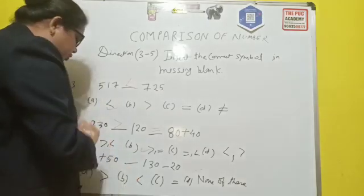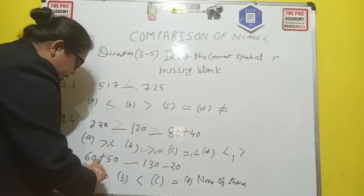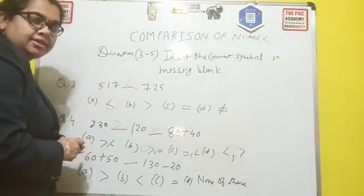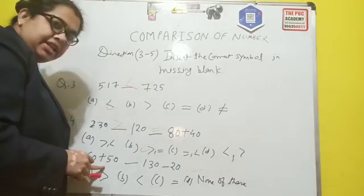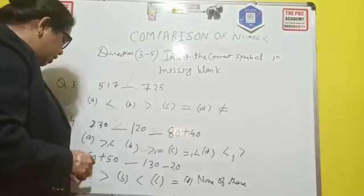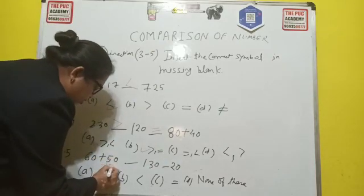Now the next question of the same direction. 60 plus 50. 60 plus 50 is equal to how much? 6 plus 5 is 13, right? So 60 plus 50 is your 130. If you want to write here, you can write it here also.